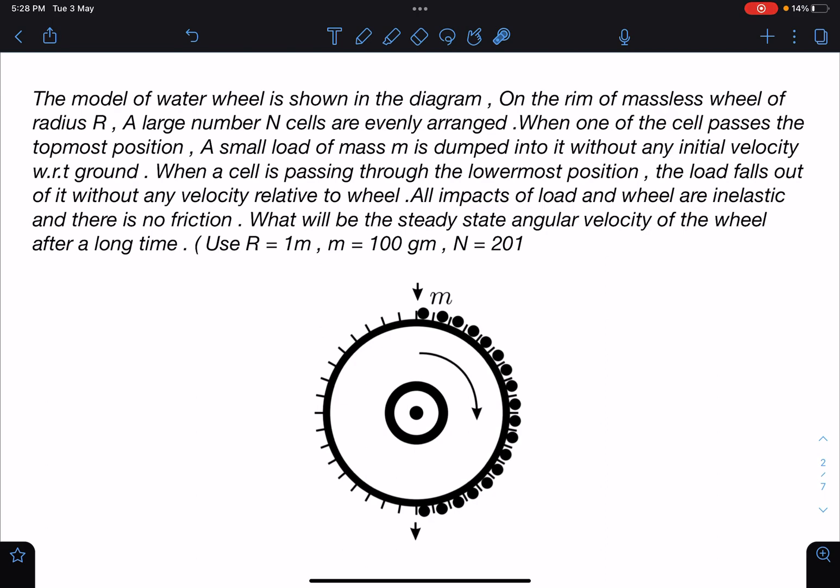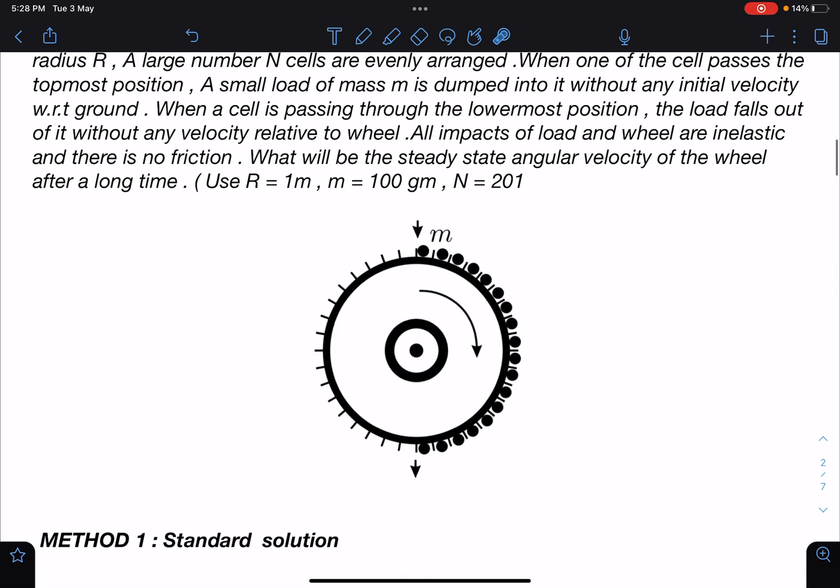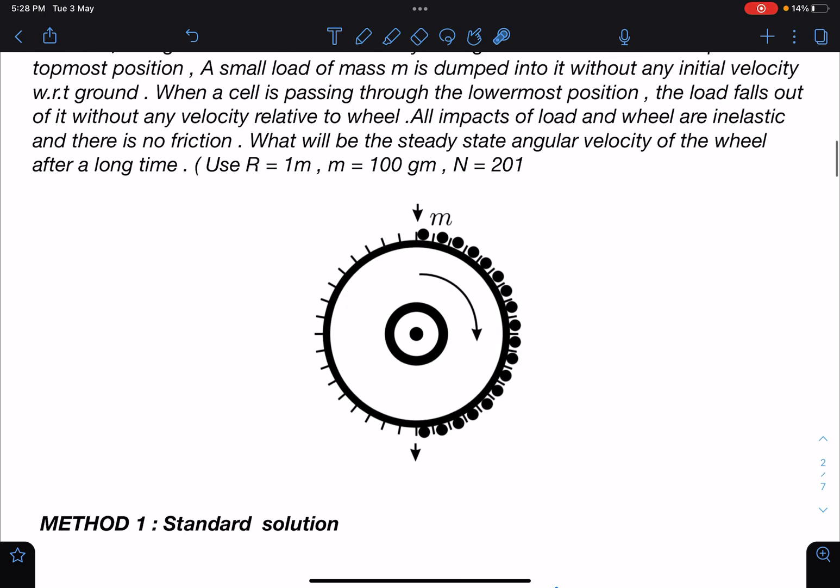First I will use the standard way of solving this question using energy approach. Since in the question they are asking us steady state omega, that means angular velocity has become constant. In this situation we can say energy-wise, whatever energy is entering into the system, this energy must be leaving also. Then only this omega can be constant, otherwise omega will change.